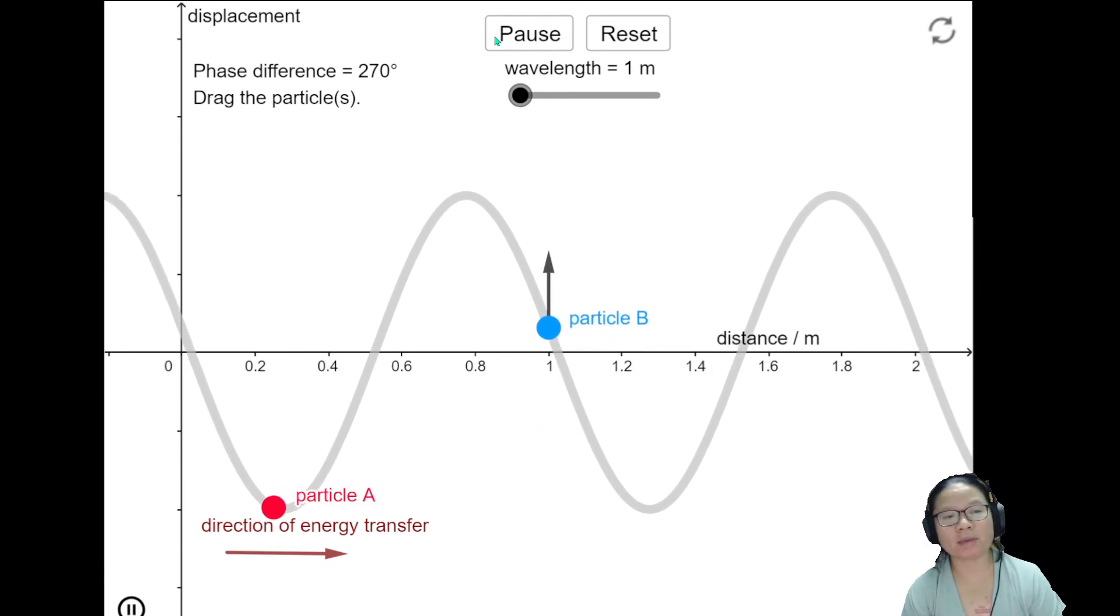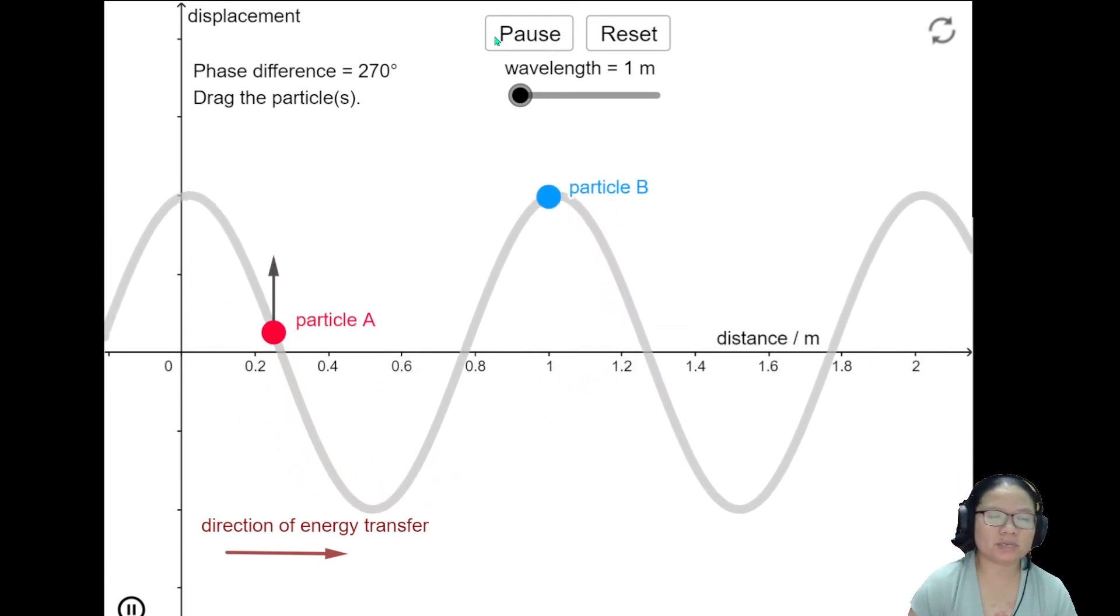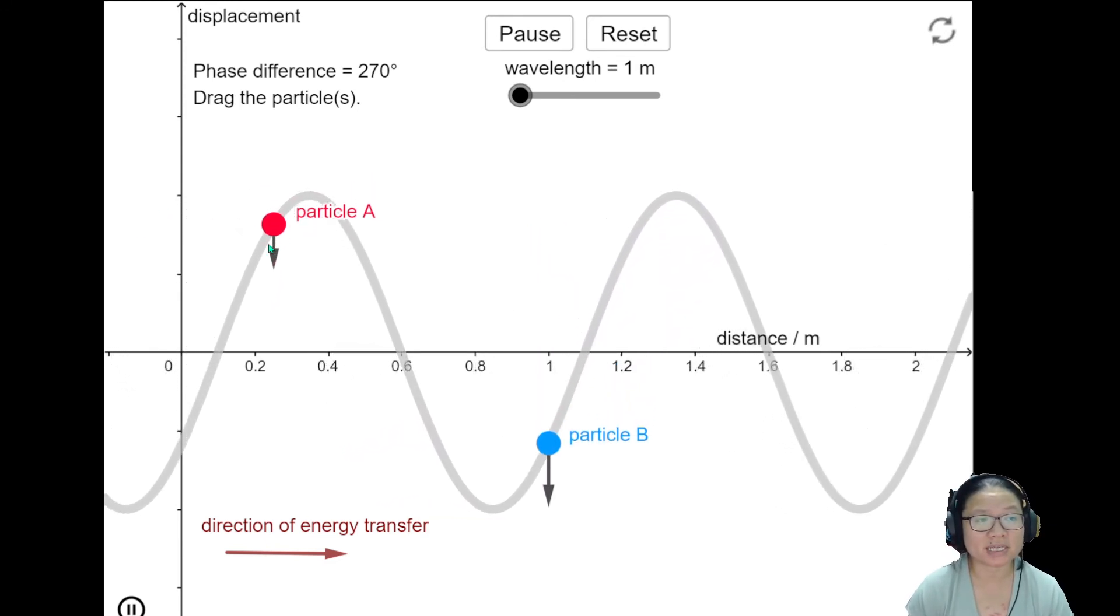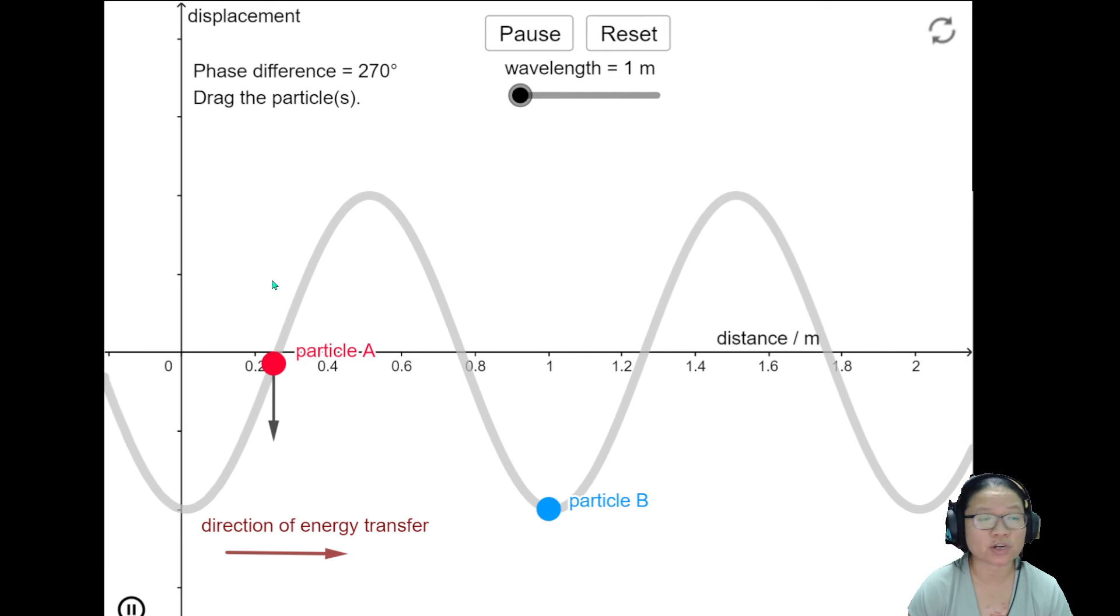And if you look at particle A and B, their relationship is fixed because particle A doesn't move from left to right. Particle B is fixed here. It's water wave or it's a transverse wave.